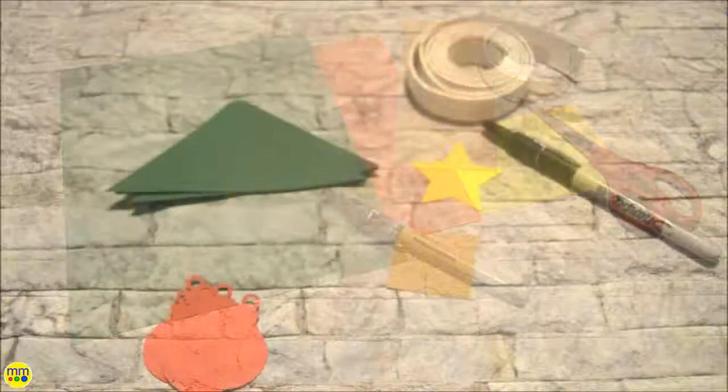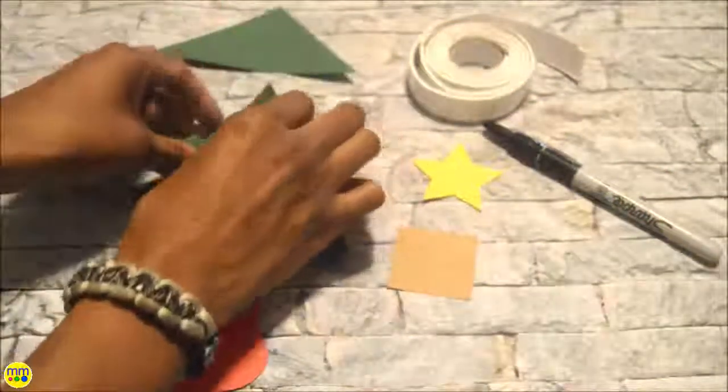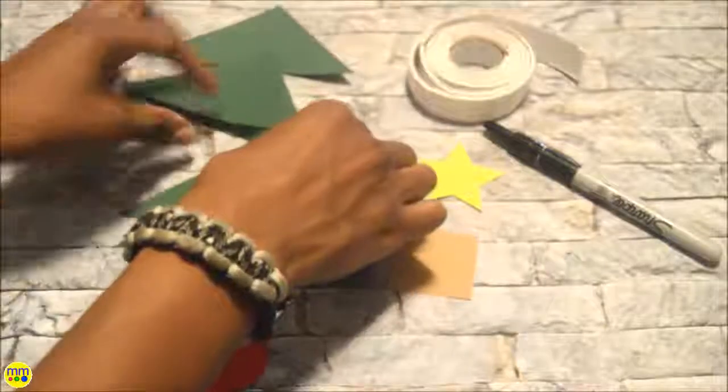Start by cutting out enough green triangles and red ornaments for your child's name, a yellow star, and brown square.